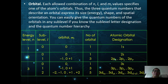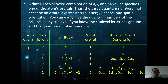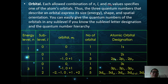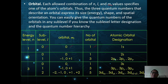Each orbital allows a combination of n, l, and ml values that specifies the orbital in the atom. The three quantum numbers describe an orbital in terms of size, shape, and spatial orientation. For energy level n equals 1, sub-level l equals 0, there is only one orientation ml equals 0, so the number of orbitals is 1. Since it is the first shell with sub-level 0, the atomic orbital designation is 1s.